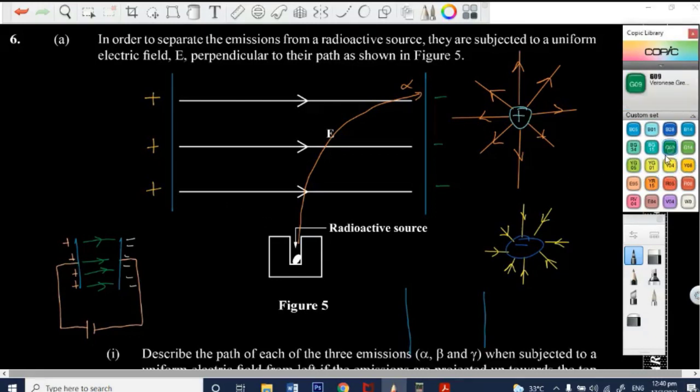Now for our beta particle, that is negative, right? So it's going to go to the left, like so. Now notice the angles of deflection. Notice for the beta particle, it is deflected at a greater angle. It is deflected at a greater angle when compared to the alpha particle, and it is due to the relative weight of each.